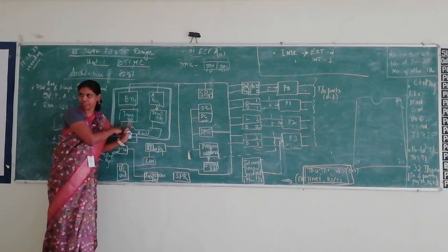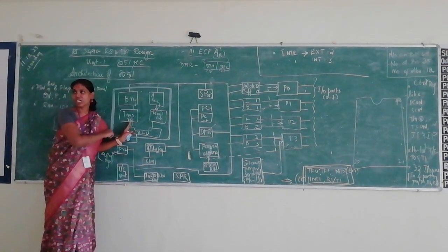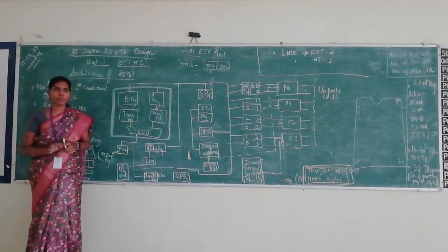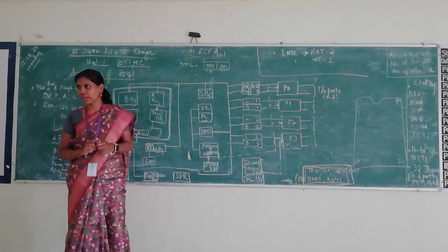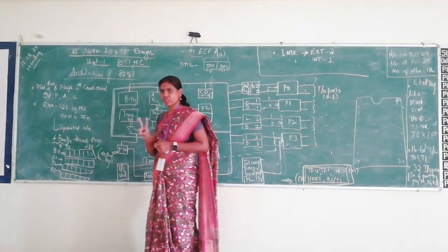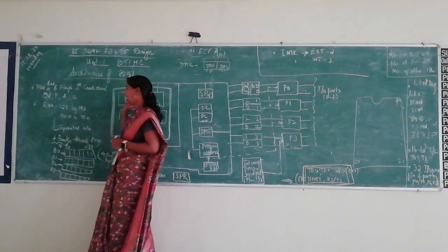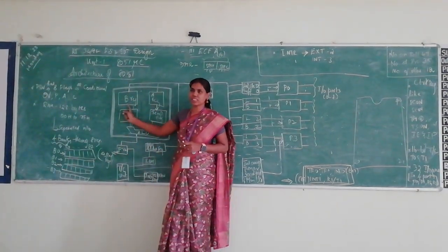We have in the architecture of 8051, in which we will be having a CPU. Now what is CPU? That is processing unit. That will be passed through two main registers. One is called the A register, another one is called the B register.